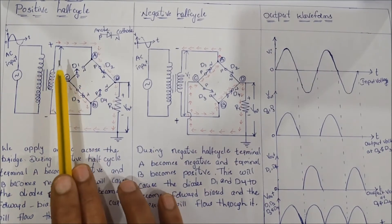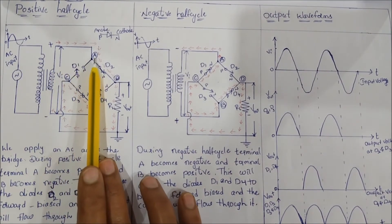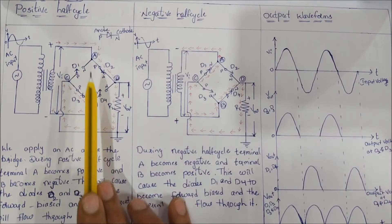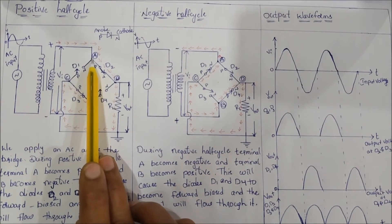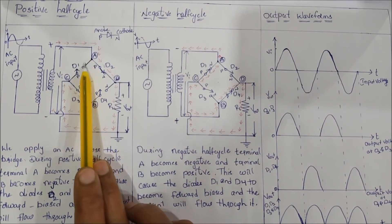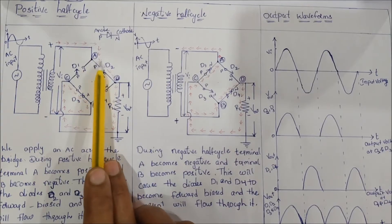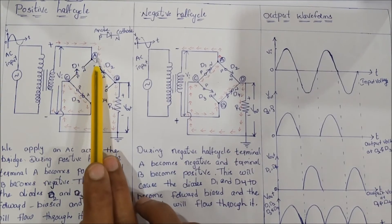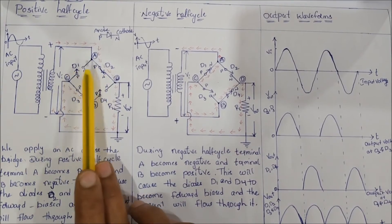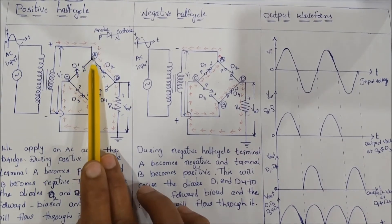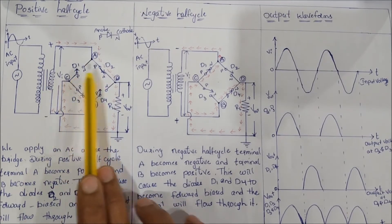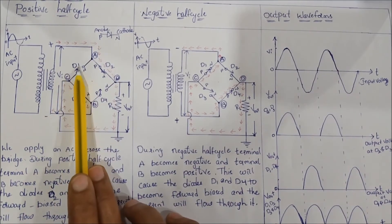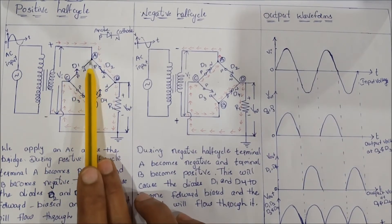During the positive half cycle, A becomes positive and B becomes negative. We have two paths for current flow in the bridge circuit. Now let's check diodes D1 and D2. First, check D1.